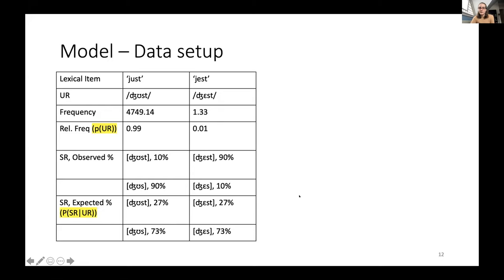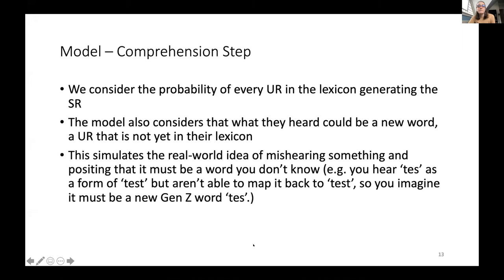In the comprehension step, if we're fed the form 'just,' the probability of 'just' given 'just' is 0.73, while the probability of 'just' given 'jest' is essentially zero. We also consider that the SR could be a new word — a UR not yet in the lexicon. For example, if you hear the word 'test' without the T and can't reconstruct that they meant 'test,' you might imagine it's some new word. I instantiate this as 'new word' — a UR in our lexicon with a pseudo-count n set by the analyst, with relative frequency calculated over the entire lexicon.